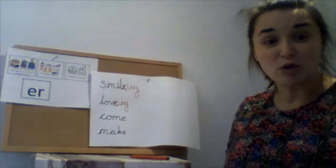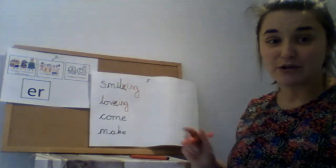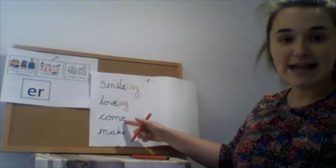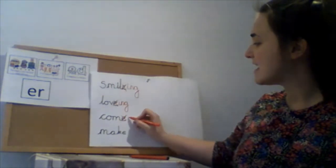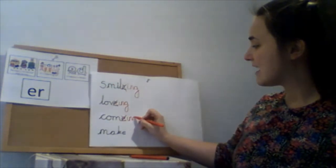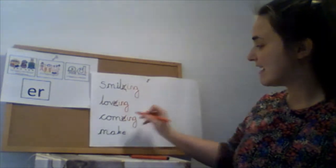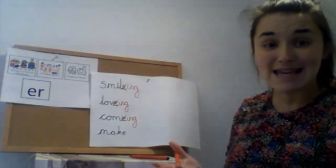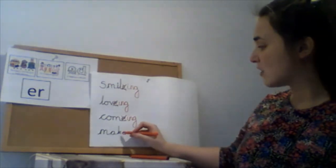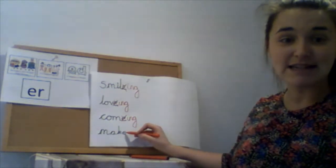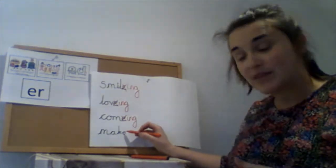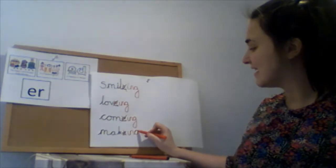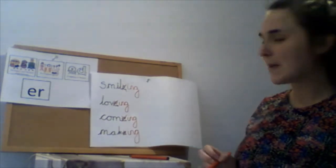If you need more time, you can pause the video, but I'm going to write it on my board. So 'come' — I can see it ends in an e, so I need to drop the e and add the suffix -ing. 'Make' — if I'm turning it into 'making', again it's got our split digraph 'a' in it, so it ends in an e. I need to drop the e and add our suffix -ing. Making.